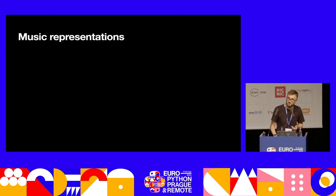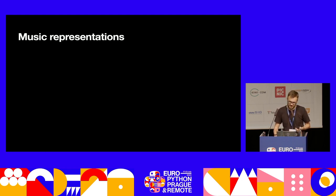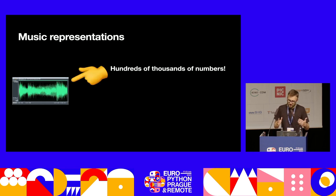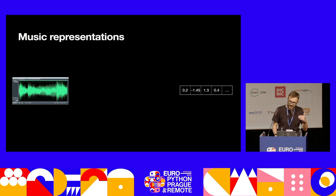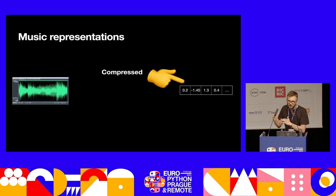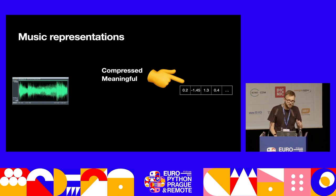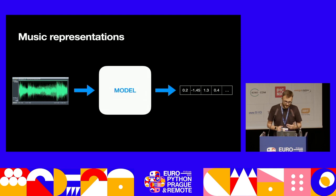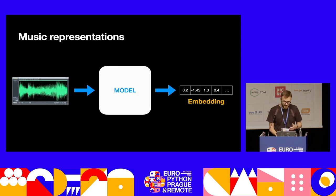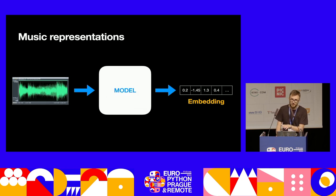Another very interesting MIR task is music representations. We start off with music or some audio, but audio is like hundreds of thousands of numbers — a very heavy data type for computers. What we would like to have is some compressed representation that's still meaningful in some way. It might not be meaningful to a human, but it is to a machine. Let's just ask a neural network to produce this. And these representations are known as embeddings.